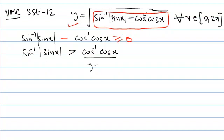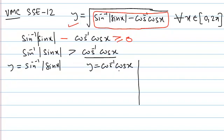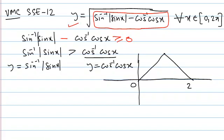We draw the graph of y = cos⁻¹(cos x) and y = sin⁻¹(sin x). Since you haven't done inverse functions yet, just learn these graphs as basic functions. cos⁻¹(cos x) is a periodic function with period 2π. Between 0 and 2π, the graph consists of straight lines: x from 0 to π, and 2π − x from π to 2π.